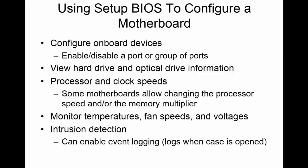When setting up the BIOS to configure the motherboard, you can configure onboard devices — you can either enable or disable ports or even a whole group of ports. You can see different information about your hard drive and optical drives. You can change the processor and clock speeds. Some boards allow changing the processor speed and the memory multiplier. You'll hear about people overclocking their processor — it's a risky situation if you want to try to get maximum performance, and there are some downfalls that can happen if you do it incorrectly.